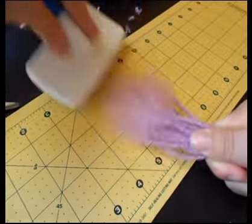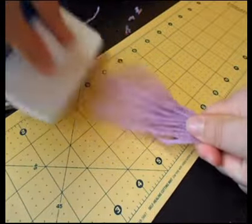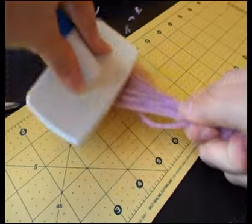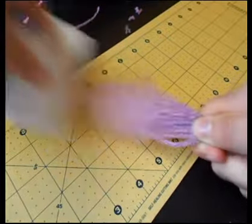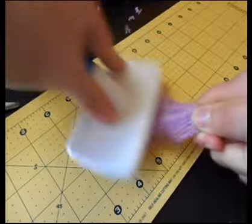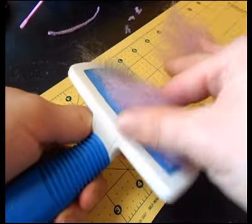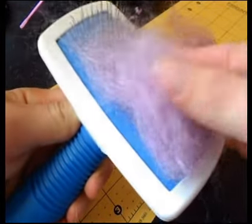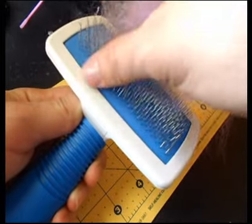As you brush, keep flipping the bundle over periodically, making sure you get all of the strands evenly. And periodically you're going to want to pull the fiber out of your brush bristles. Just pinch it and kind of pull it out to keep it from getting clogged.